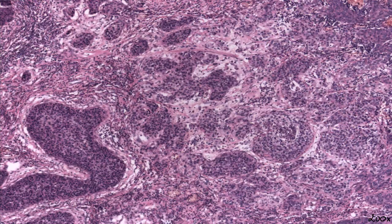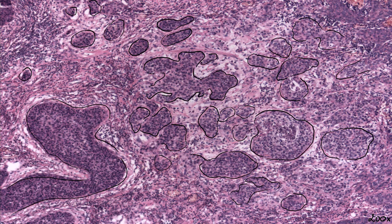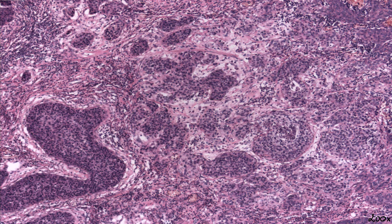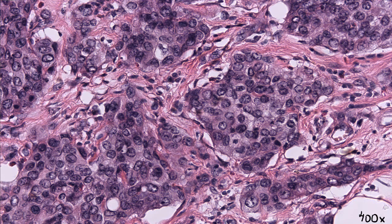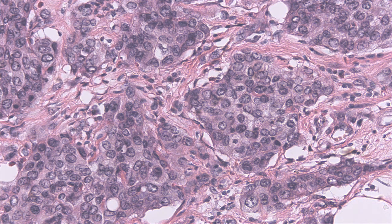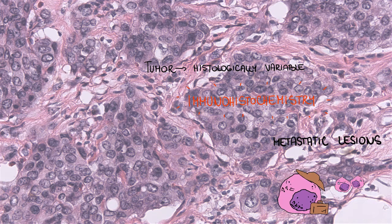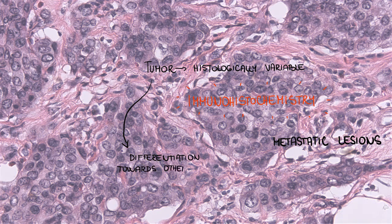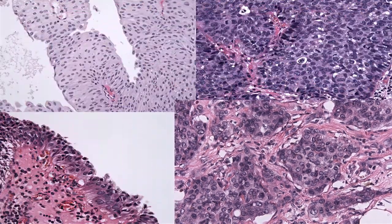On the microscopical level, invasive urothelial carcinoma forms irregular nests, strands, lobules, or grows in a solid fashion. The neoplastic cells are atypical, usually middle-sized, of various shapes, and with eosinophilic cytoplasm. In summary, the tumor is histologically very variable, and sometimes other diagnostic methods proving the urothelial origin of the cells are necessary, for example immunohistochemistry — this is especially true for metastatic lesions. The tumor may also show differentiation towards other cell types, creating structures of adenocarcinoma or squamous cell carcinoma, which may modify both the microscopic picture and the prognosis of the lesion.